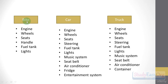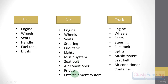These entities — bike, car, and truck — have some properties. Bike has: engine, wheels, seat, handle, fuel tank, and lights. Car has: engine, wheels, seat, steering, fuel tank, lights, music system, seat belt, air conditioner, fridge, and entertainment system. Truck has: engine, wheel, seat, steering, fuel tank, lights, music system, seat belt, air conditioner, and a container.